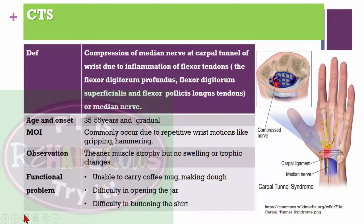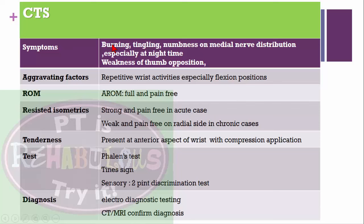Symptoms: the patient will complain of burning, tingling, or numbness in the median nerve distribution, especially at night, and weakness of the thumb with opposition also affected. Aggravating factors include repetitive wrist activities especially in flexion. Active range of motion is full and pain-free. Resisted isometrics are strong and pain-free in acute cases, and weak and pain-free on the radial side in chronic cases.